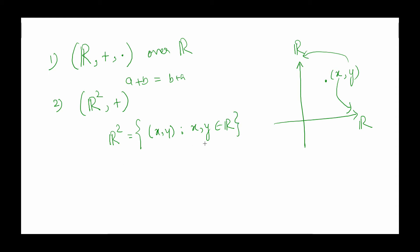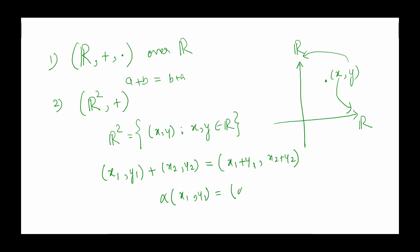The scalar multiplication in ℝ² is defined as α·(x₁, y₁) = (α·x₁, α·y₁). With this addition and scalar multiplication, ℝ² forms a vector space. We can verify all eight properties here as well.